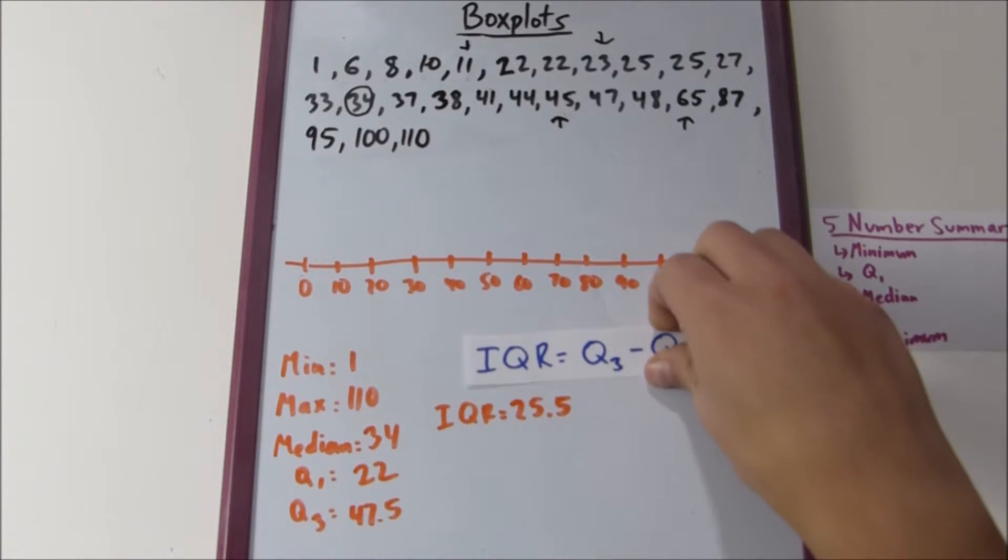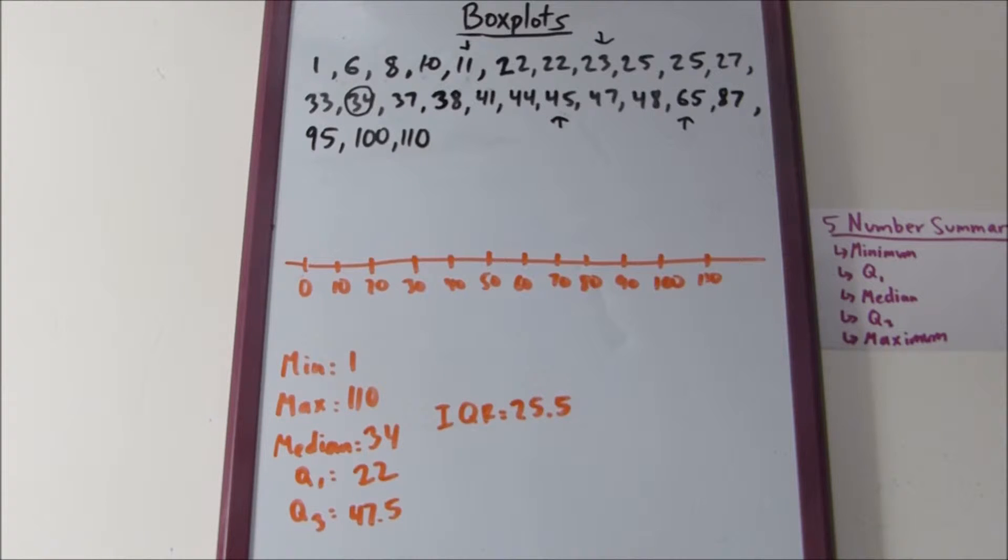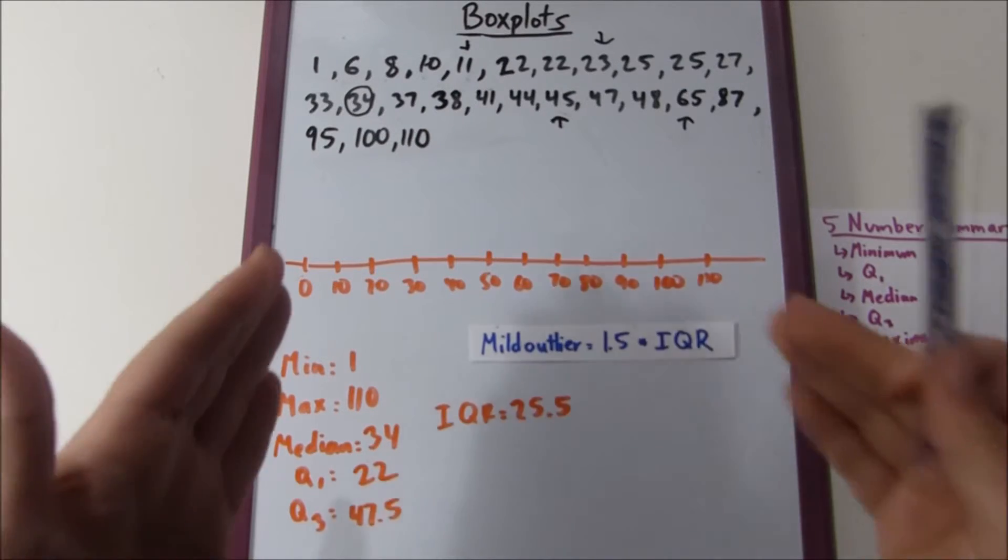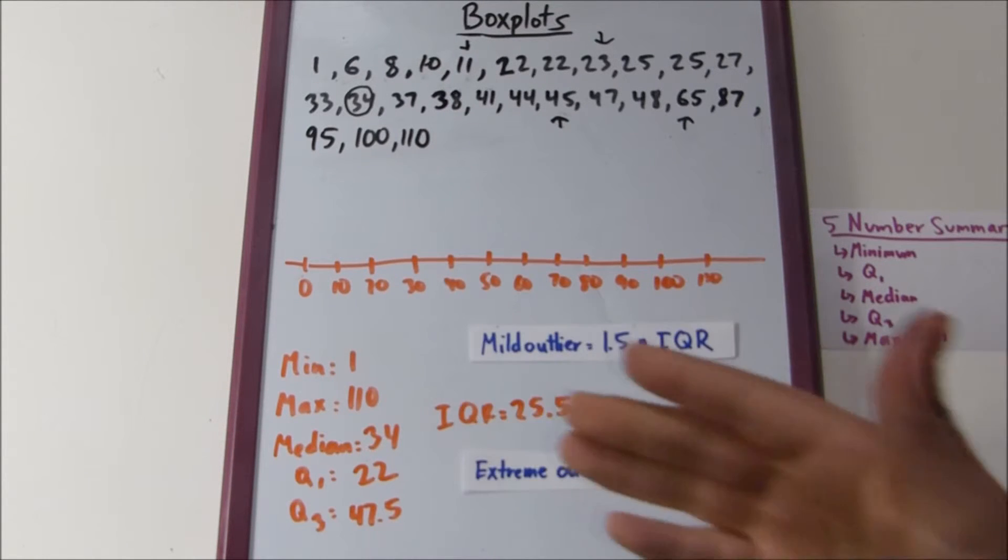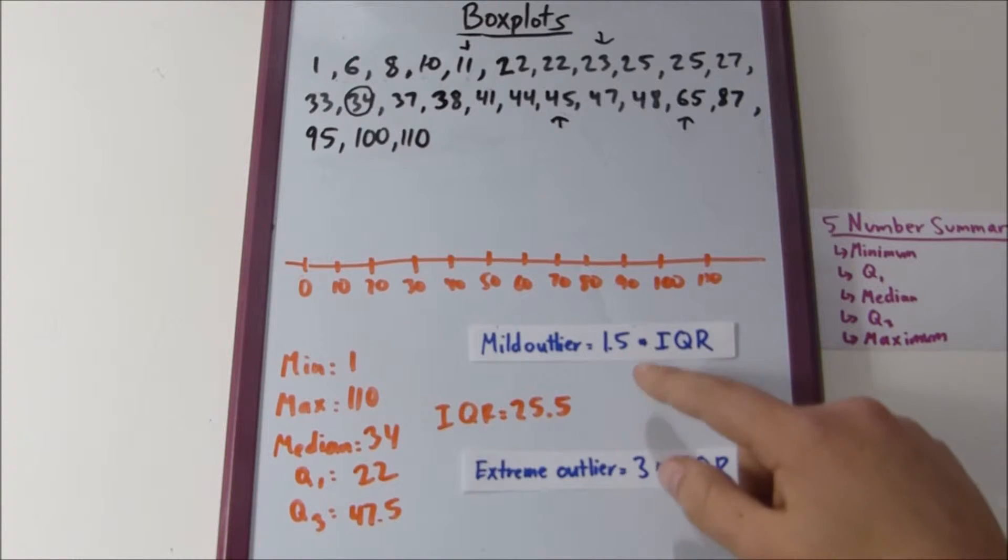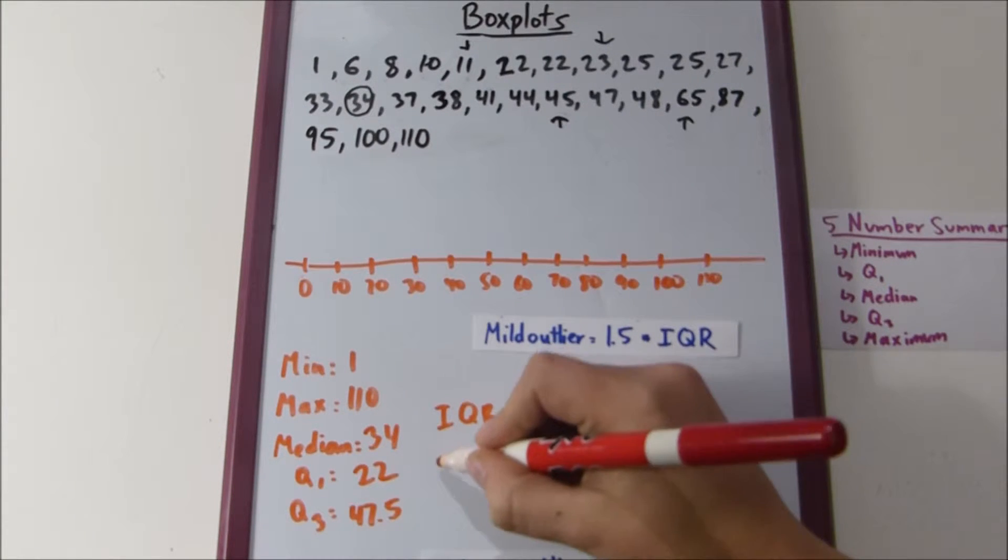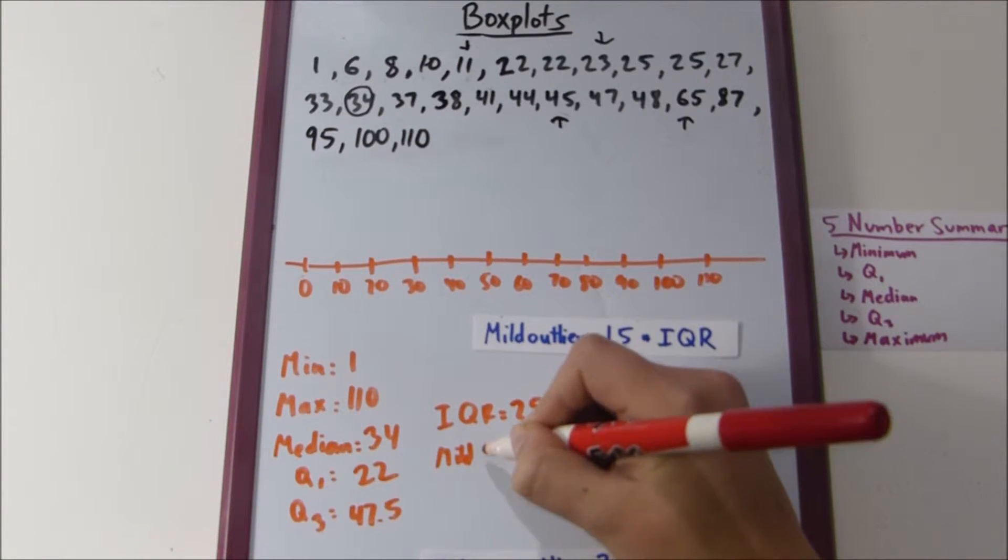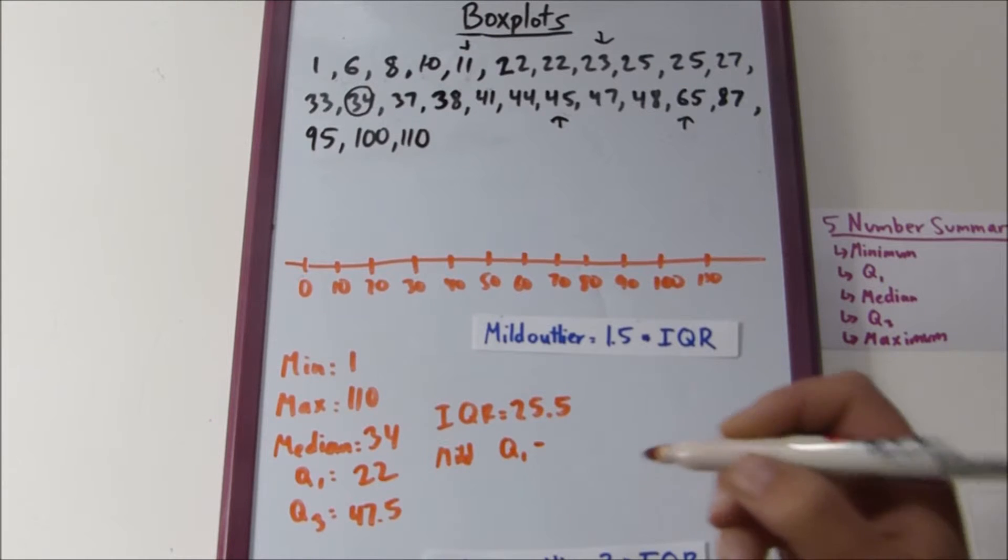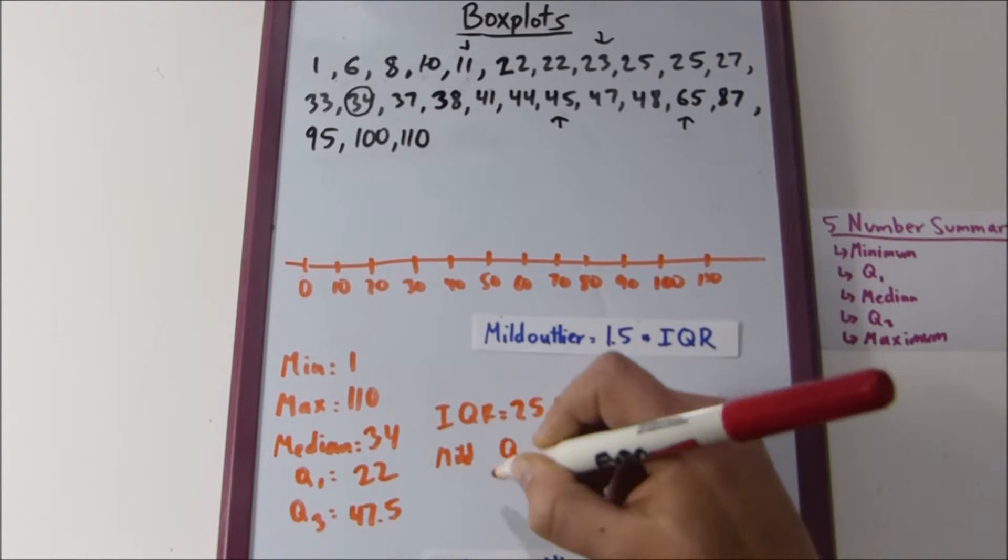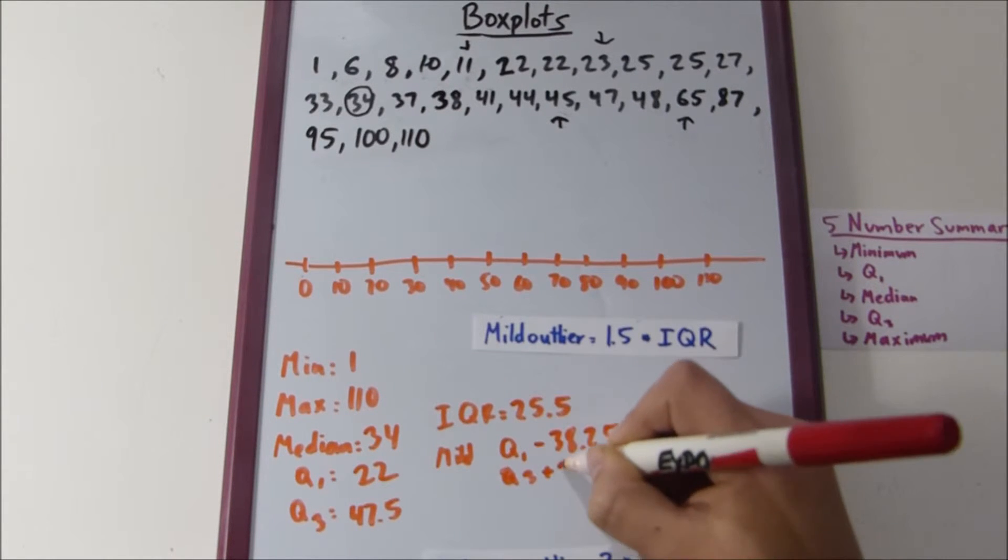Now that we have that, we can determine if we have any outliers. A mild outlier is one point five times the IQR added on to quartile three or subtracted from quartile one. So, you can see how outliers can be on either side of the main part of the box plot. Then we have extreme outliers, which are known as three times IQR, which you add on to quartile three or subtract from quartile one. So, let's find what we would have to add or subtract from either quartile.